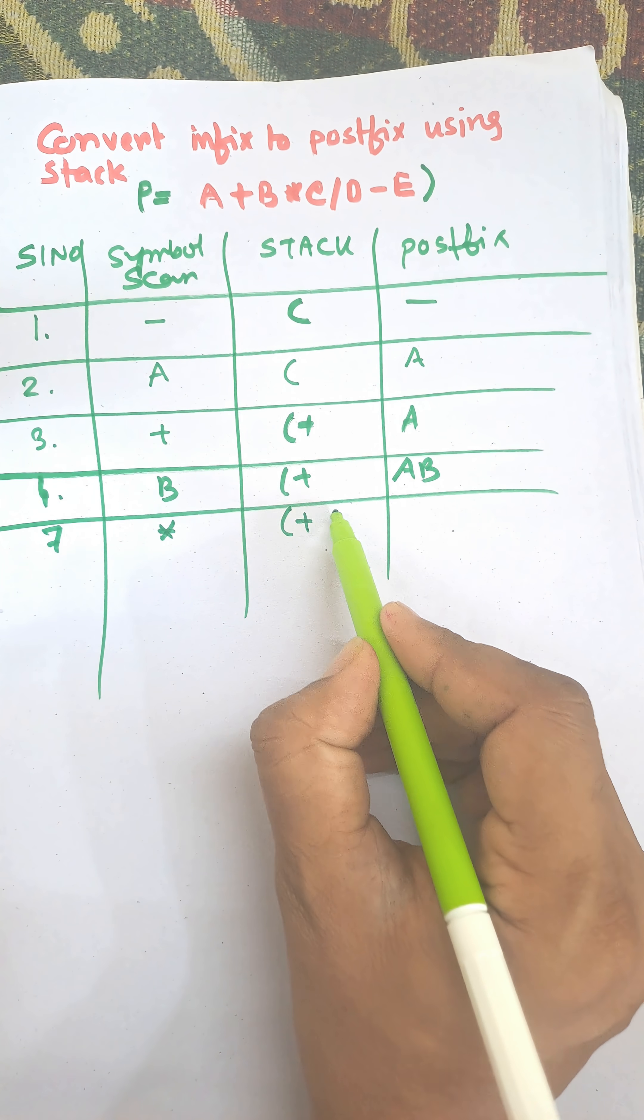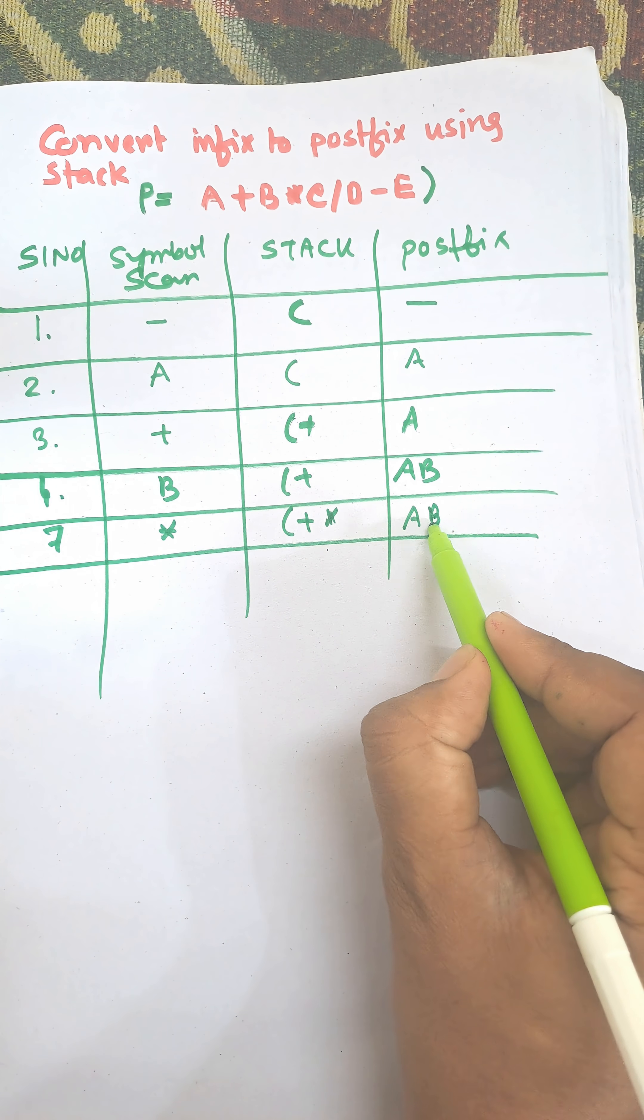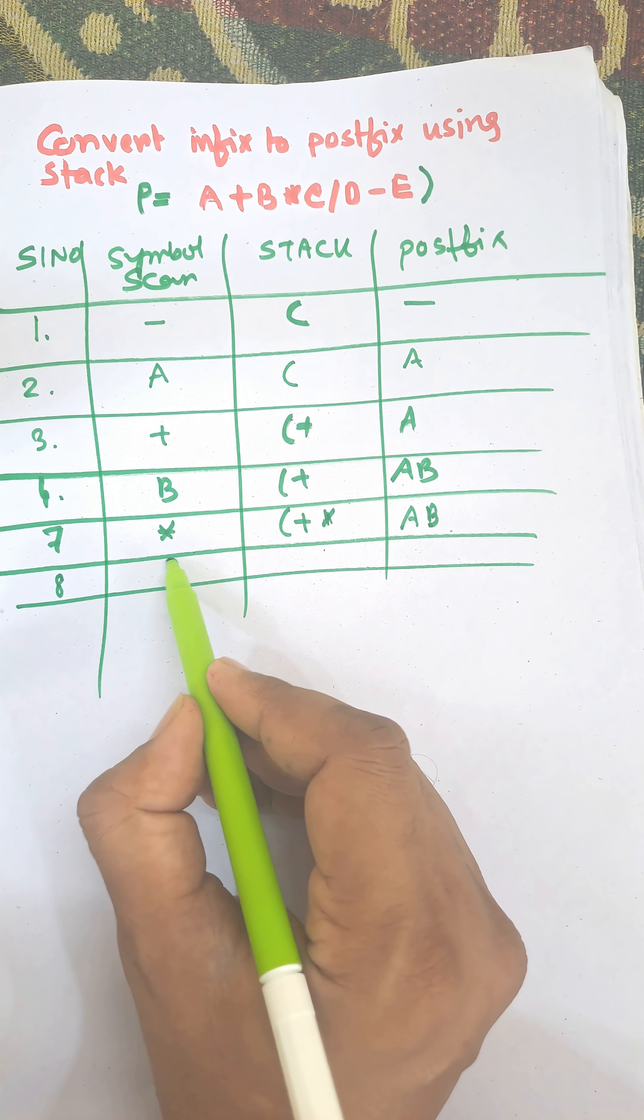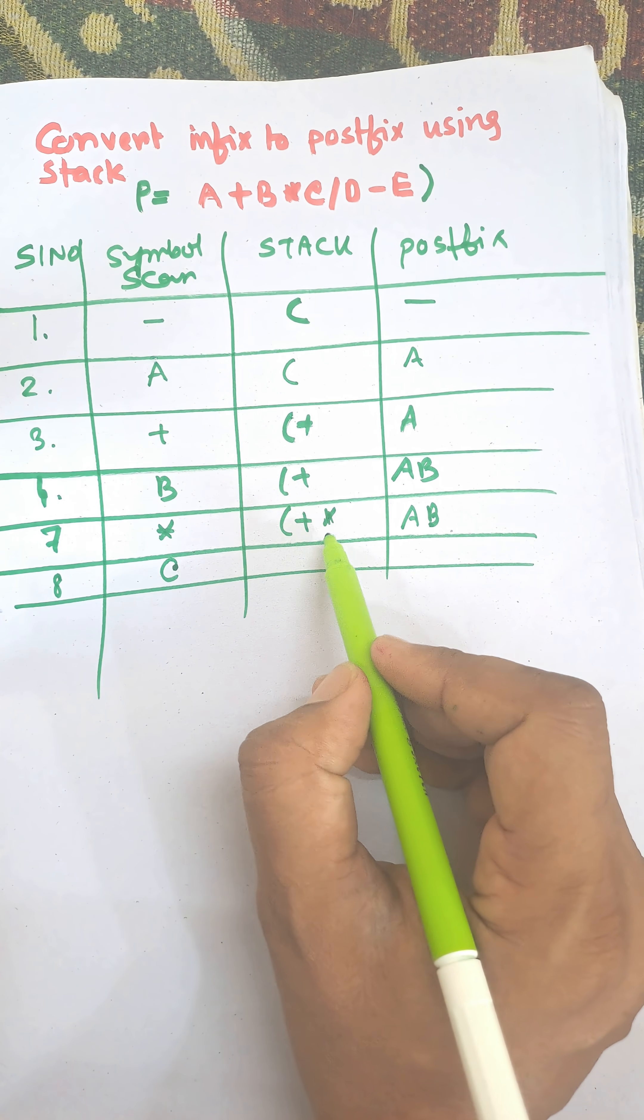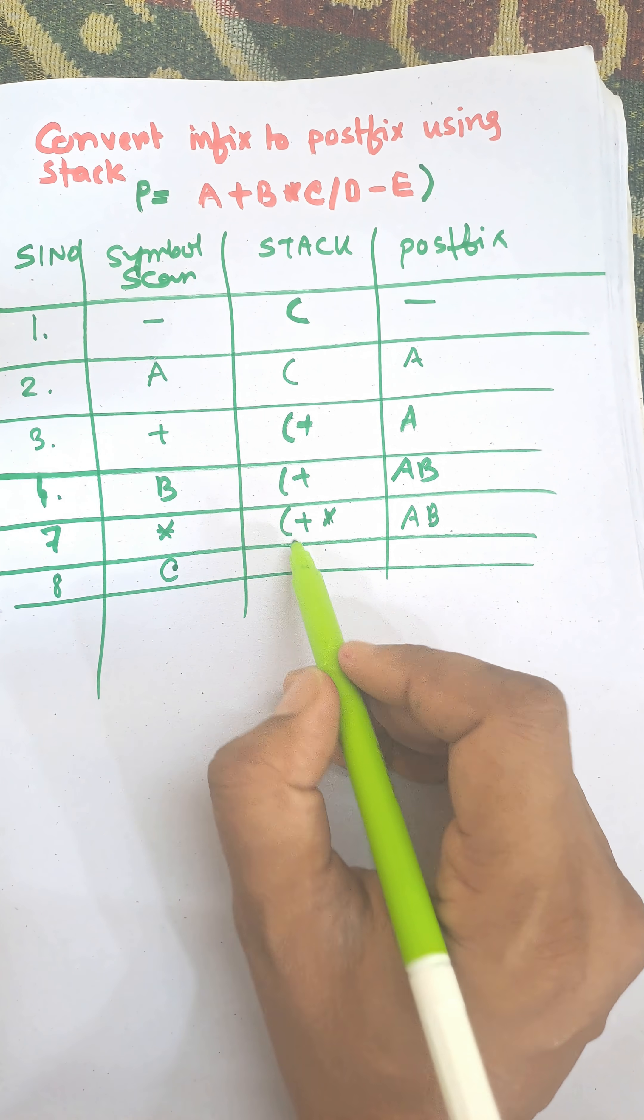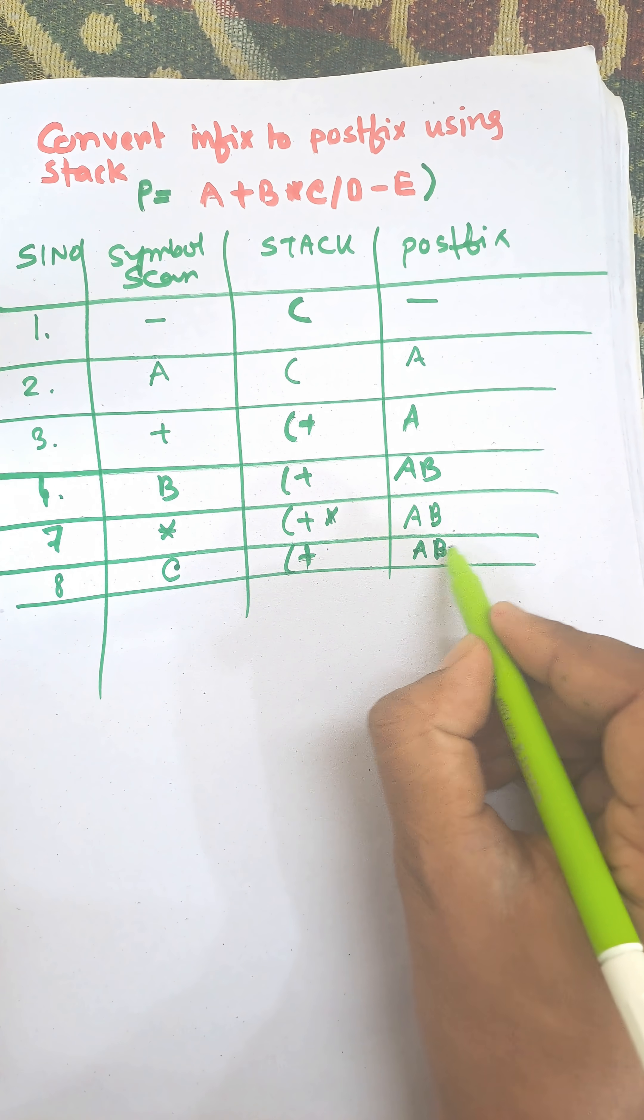When C operand arrives, the star will be popped from the stack. Star will be popped from stack as the priority of multiply is greater than plus, so it will be popped from stack and the result is A B C multiply.